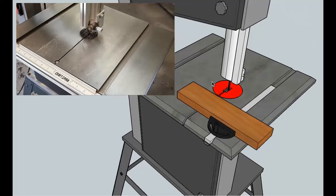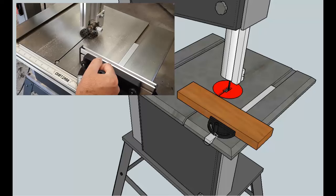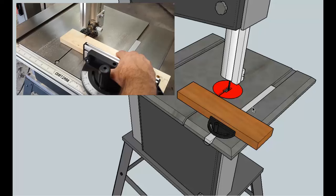Next we're going to look at a miter gauge going across. The gauge itself is here, and right now it's set up at a 90 degree angle. As you push the gauge, it pushes the block of wood through the saw.